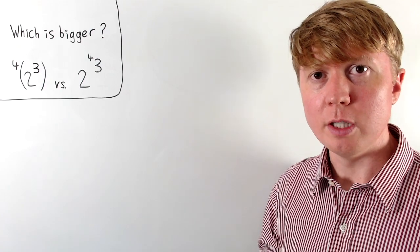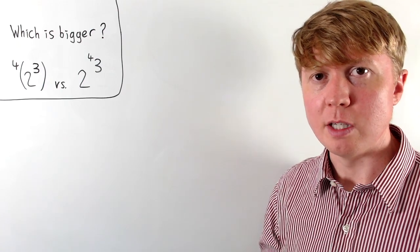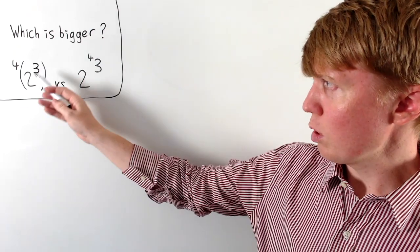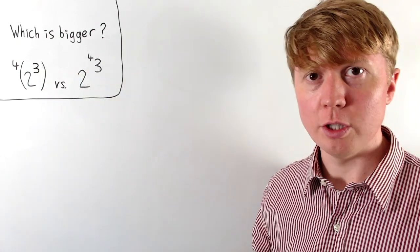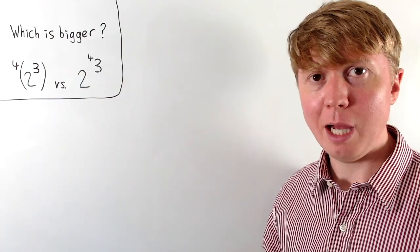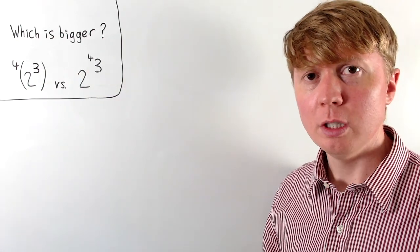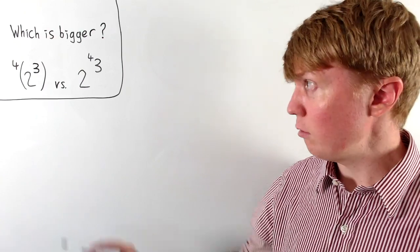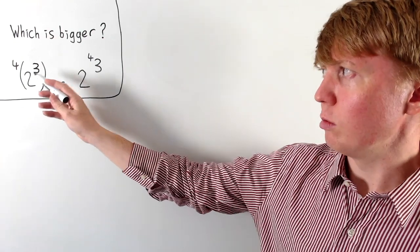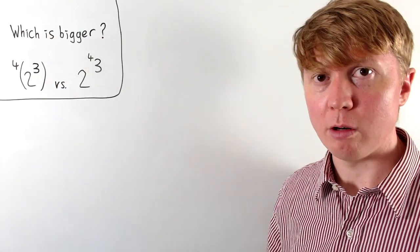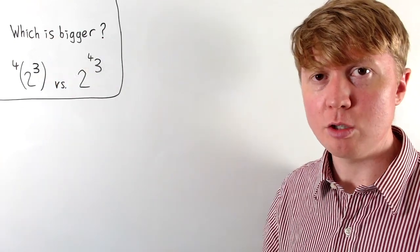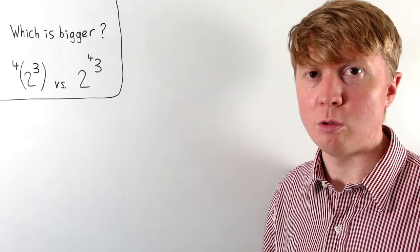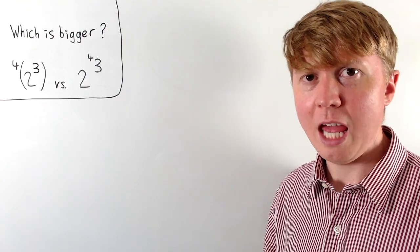We're going to find which of these two numbers is bigger. On the left we've got two to the power of three, but that four isn't a power of four — it actually represents a tetration. Inside the brackets we've got two to the power of three, which means two multiplied by itself three times, so that's just eight.